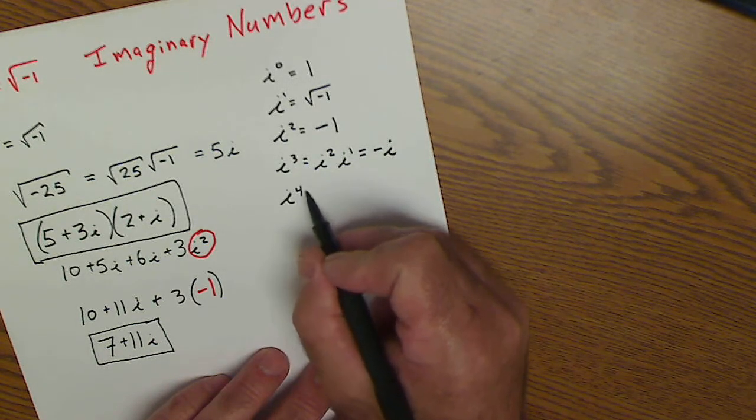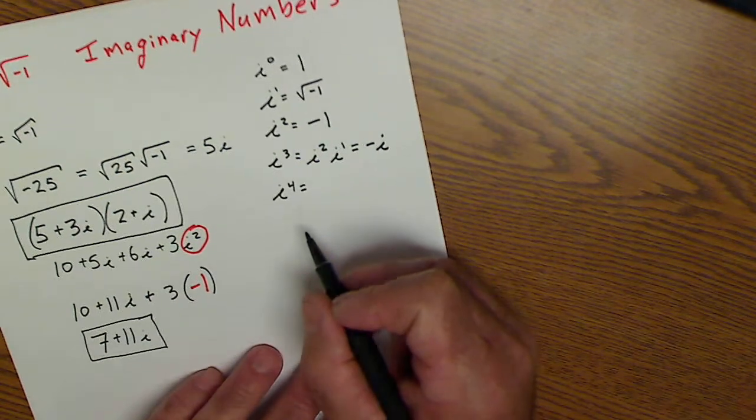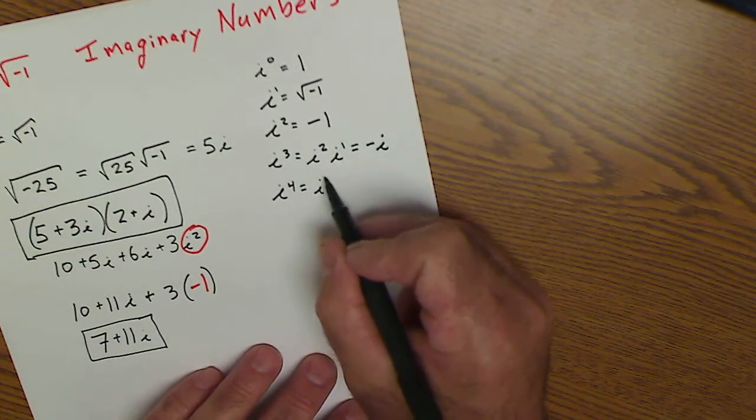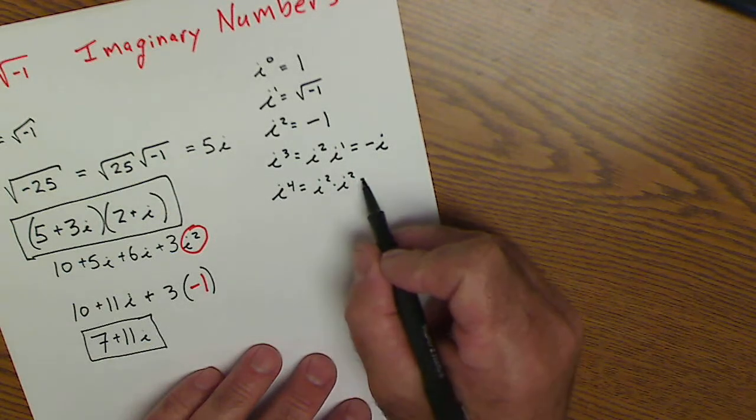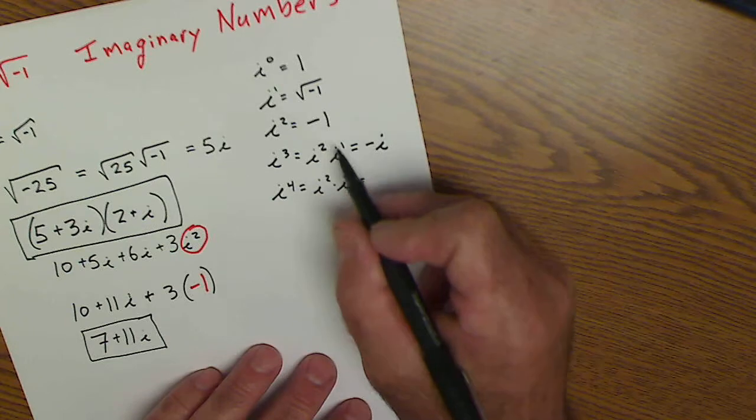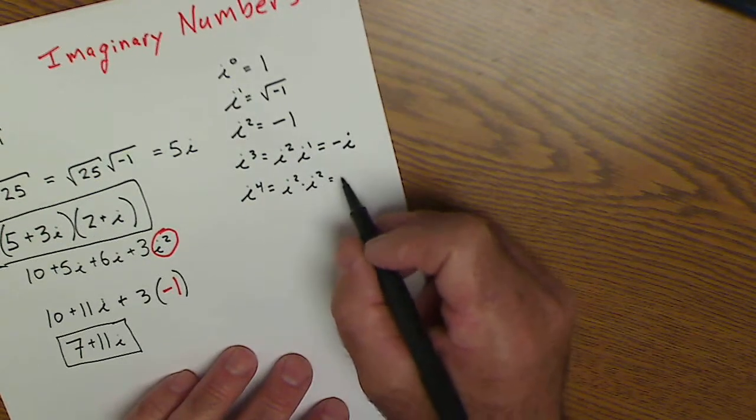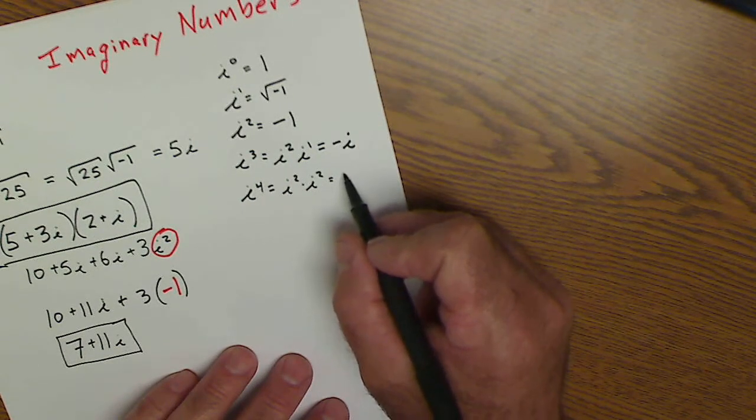i to the fourth would be the same thing as i squared times i squared. Same basis, add the exponents i to the fourth. So i squared is negative 1 times i squared is negative 1. So I'd have negative 1 times negative 1 or 1.